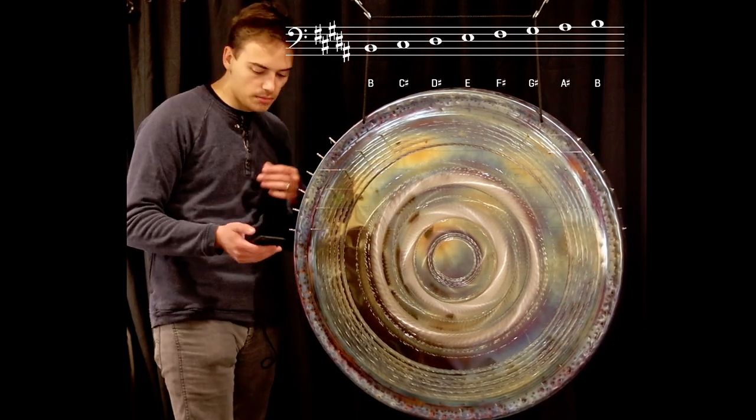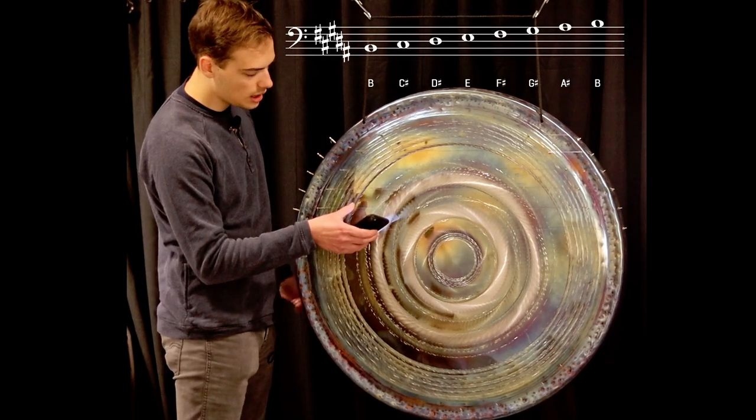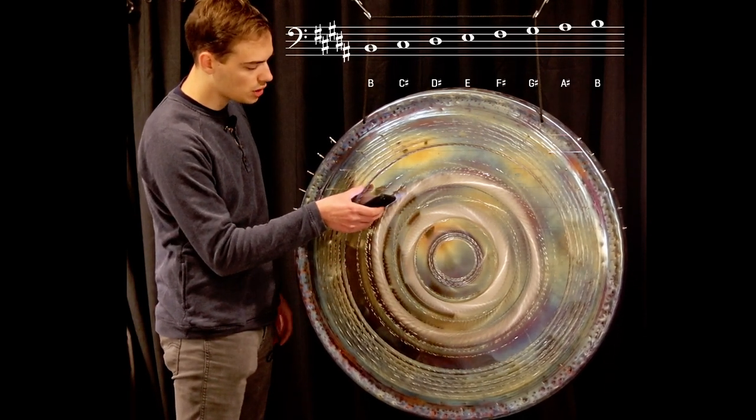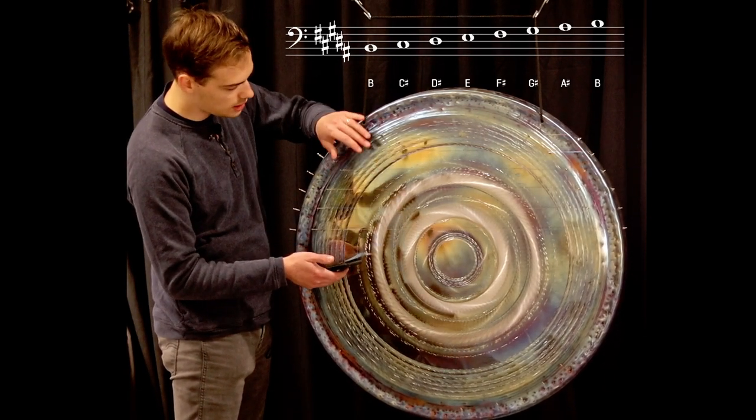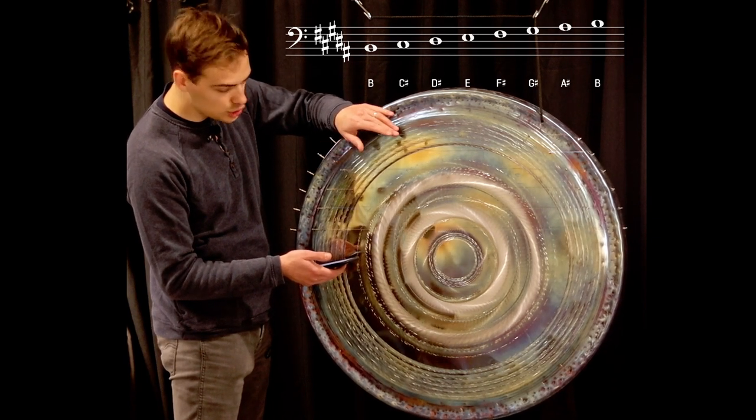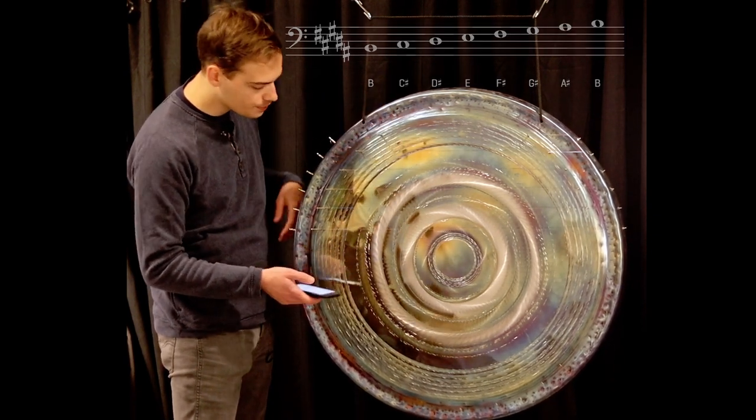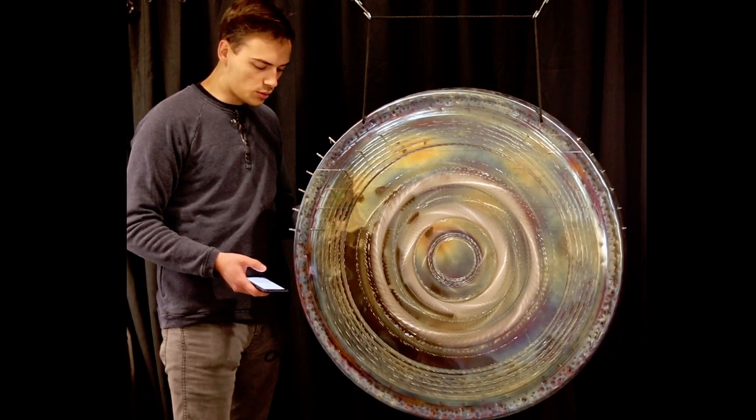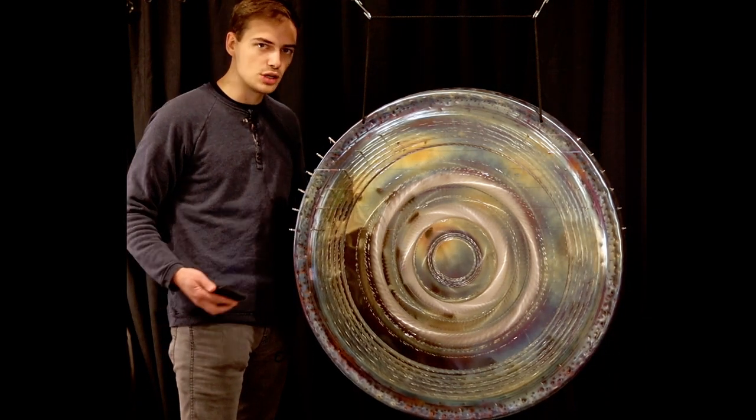And so since we're tuning this to B, it's going to be B2, F sharp 3, G sharp 3, B3, C sharp 4, G sharp 4. And the first thing we're going to want to do is give a little bit of tension on each string, just to make sure it's not too out of whack with itself.